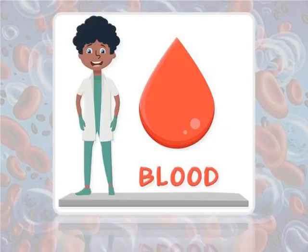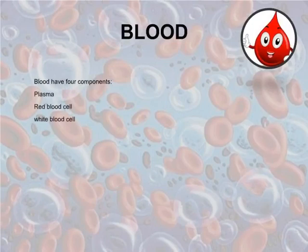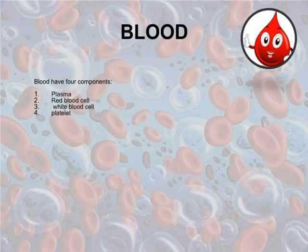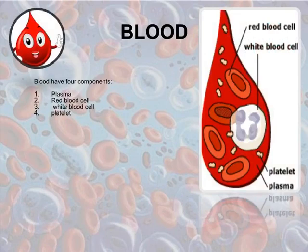Starting with blood — blood has four components: plasma, red blood cells, white blood cells, and platelets. Each of these components has a unique function in our body and in medicine.